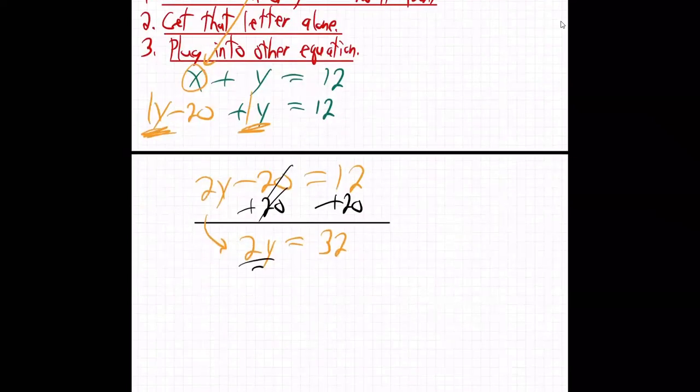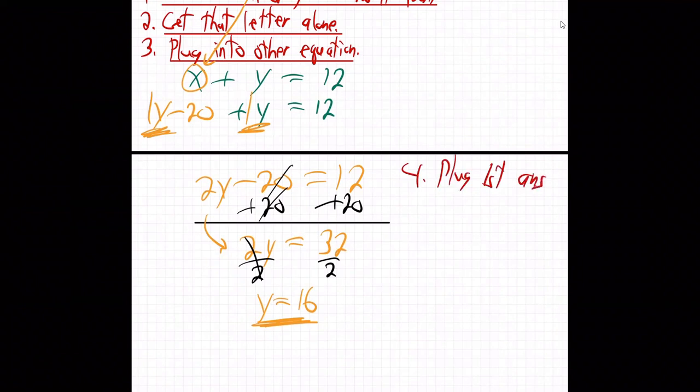Last step to finish solving for Y. Divide by 2. Boom. Y is 16. So we got Y. So now how do you get the other letter? You just plug in anywhere you want, doesn't matter. Move over here to step 4. Plug first answer anywhere to get the other answer.